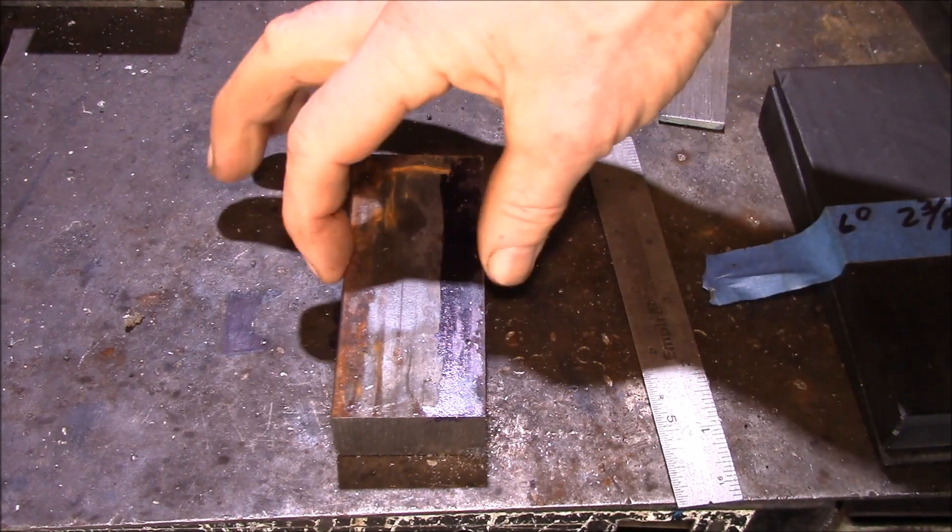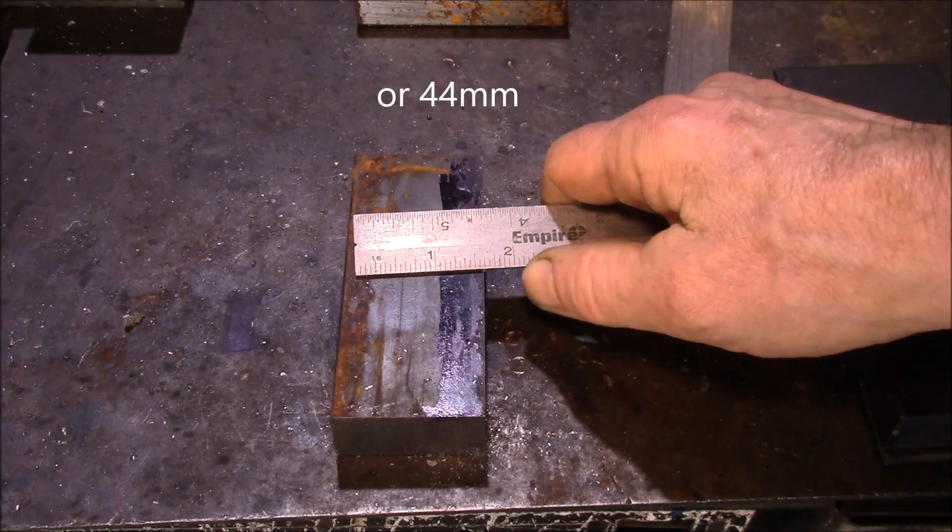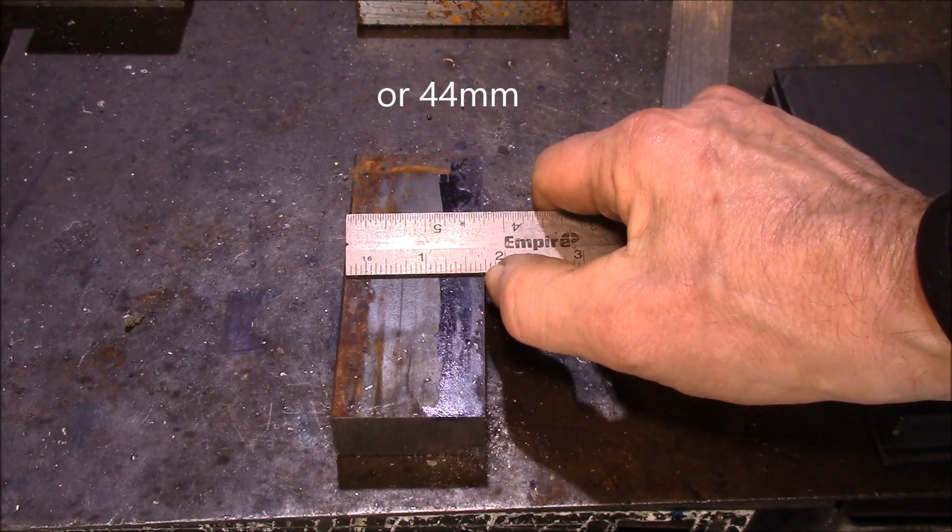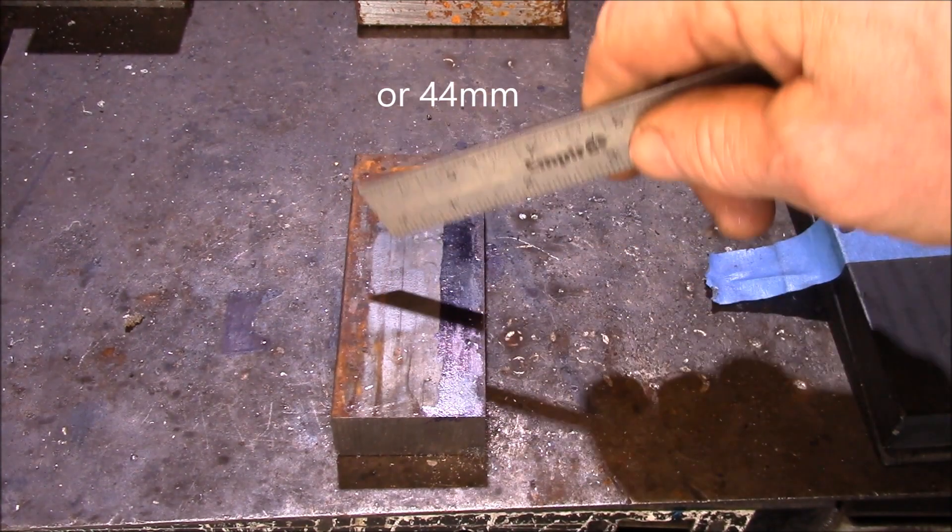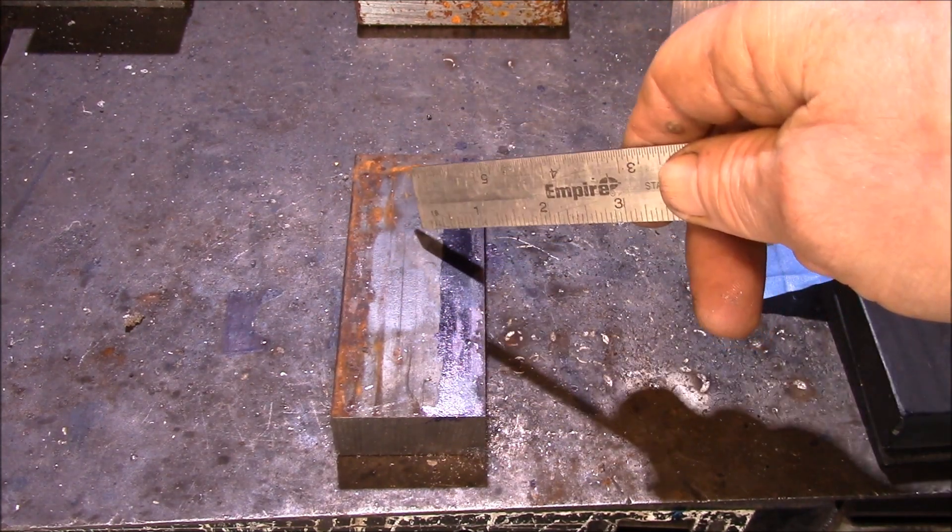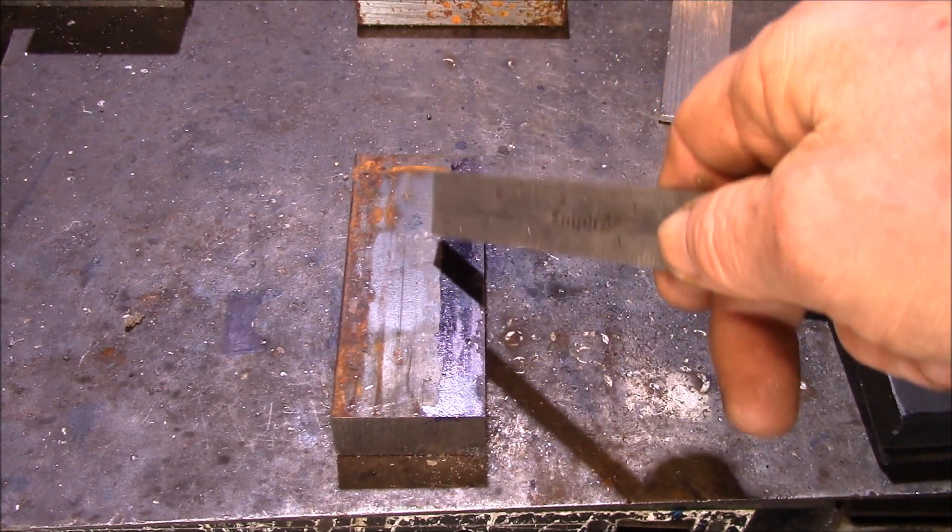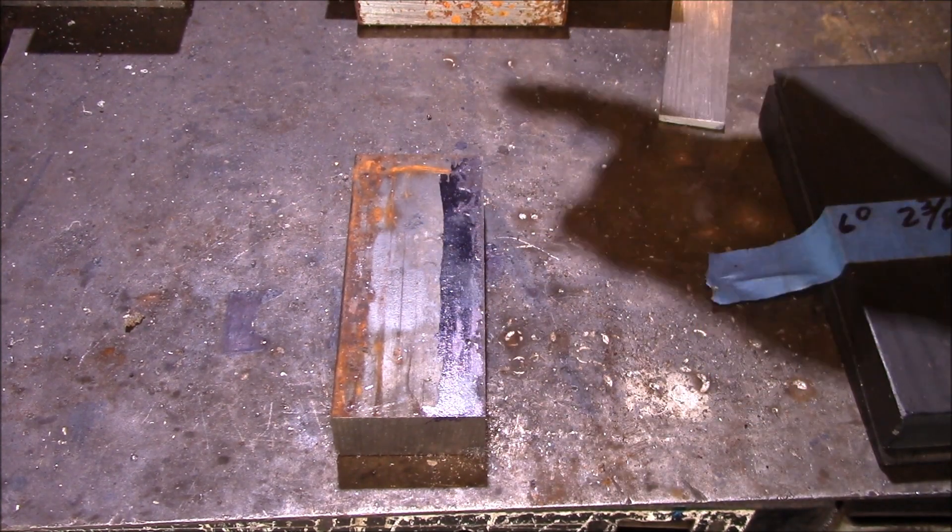So I started with a two inch wide, 50 millimeter wide piece of steel there. This one we have to cut down to one and three quarter inches and this will be a block of steel that we're going to make a pair of axle pinion shims for an early model Jeep, probably a CJ3 or something like that.